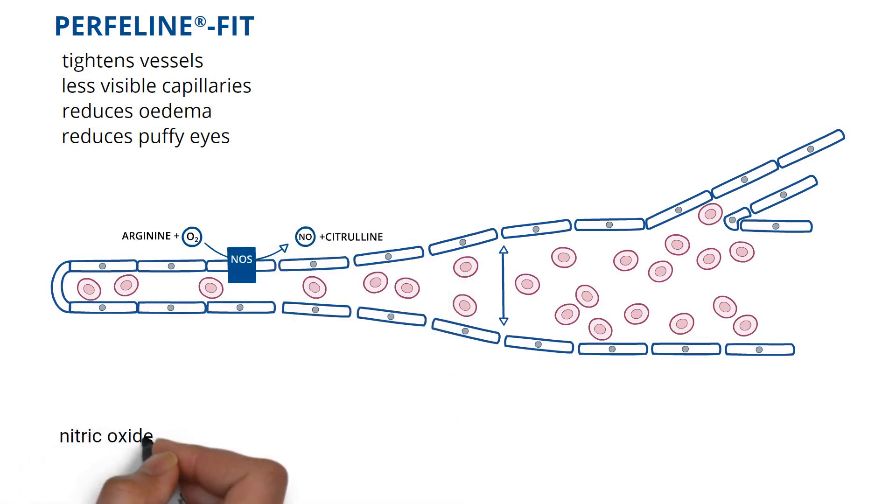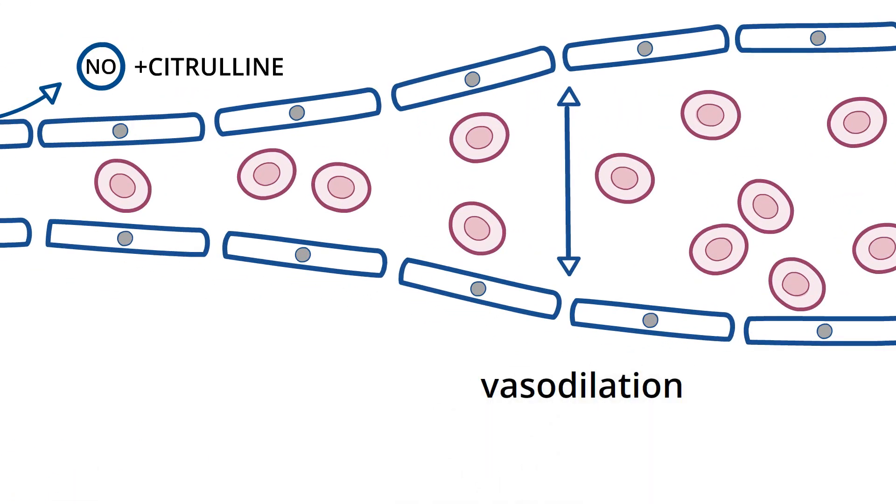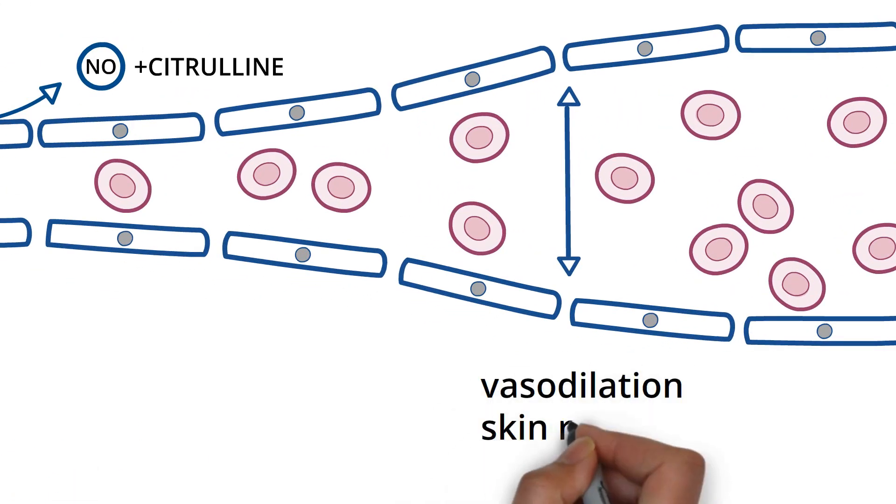It produces nitric oxide, responsible for pro-inflammatory widening of microvessels. By that, the skin appears red, and the vessels are better visible.